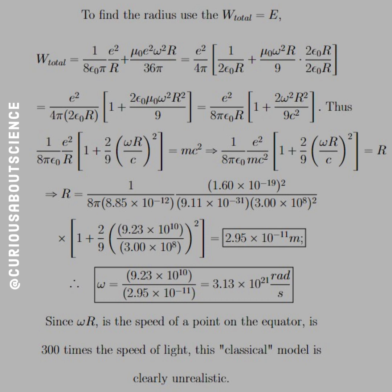Since we found omega R as our product and we just found R, we divide to find omega, which equals 3.13 times 10 to the 21 radians per second. Going back to omega R not making sense: since omega R is the speed of a point on the equator, it is 300 times the speed of light. This classical model is clearly unrealistic. The speed of light being a bound that we have puts things into perspective — this is not a good model in a classical sense.